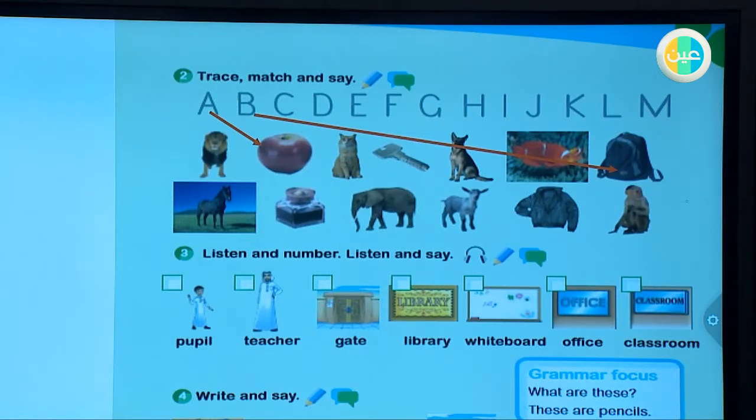Let's start. First of all, A: apple. Good job. What about B? Perfect, bag. I will give you time to match the letter with the words. Are you done? Let's check it. C goes with camel. What about D? Good job, dog. What about E? Perfect, elephant. What about F? Excellent, fish. What about G? Goat. What about H? Yes, excellent, horse.